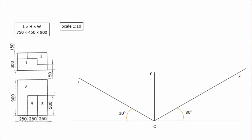If you want to create a scale, you can use a scale of 1:10. If you want to create the rectangle box at this scale, it will be 75 by 45 by 90 mm. You can create the rectangle box with 75 mm using isometric lines.